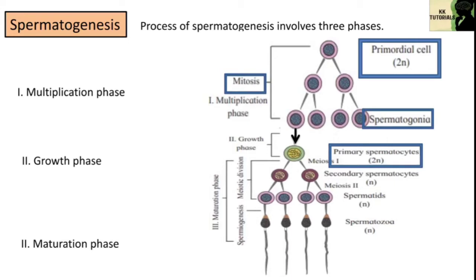In the maturation phase, it involves meiotic or reduction division. The primary spermatocyte undergoes the first phase of meiotic division, that is meiosis 1, leading to the formation of two haploid cells called secondary spermatocytes, with 23 chromosomes each. The secondary spermatocyte then undergoes the second phase of meiotic division, that is meiosis 2, to produce four haploid spermatids.